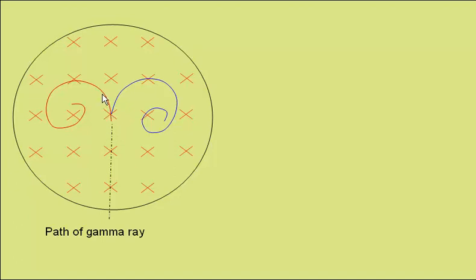This track is going round in this direction, and using Fleming's left hand rule, if we point our first finger into the screen showing the field direction, and have our thumb pointing towards the centre of this spiral, we see that the current follows the spiral, meaning this is the direction of a positive charge, so this would be the positron.